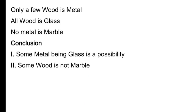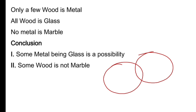Uske baad kuch variety aane lagti hai, jaise 'only a few wood is metal.' 'Only a few' ka matlab — agar sirf 'few' likha hota toh woh 'some' hi hota. Agar 'most' likha hota, woh bhi 'some' hi hota. 'Most,' 'few,' 'too much' — kuch bhi aisa likha ho, uska matlab 'some' hai. Lekin 'only a few' ka matlab alag hota hai.